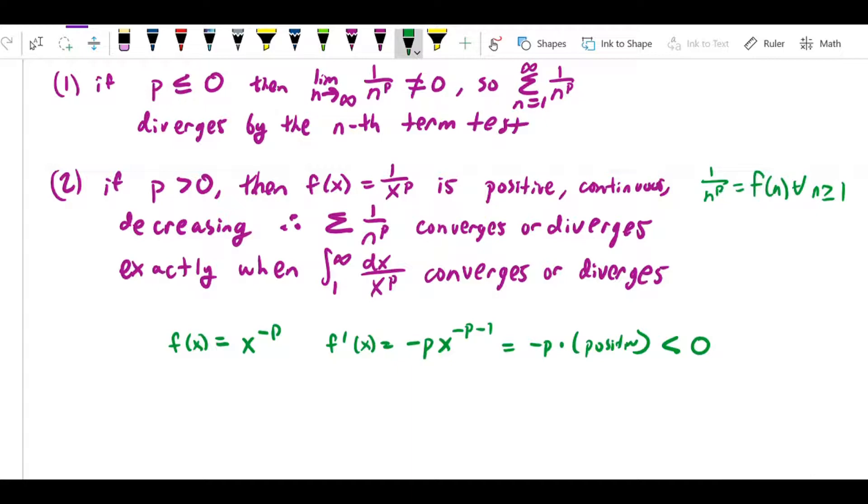So we have f of x that meets the conditions in the integral test. And what we know is that when we integrate that function from 1 to infinity, we know that it converges or diverges depending on the value of p, because it's just a p-integral.